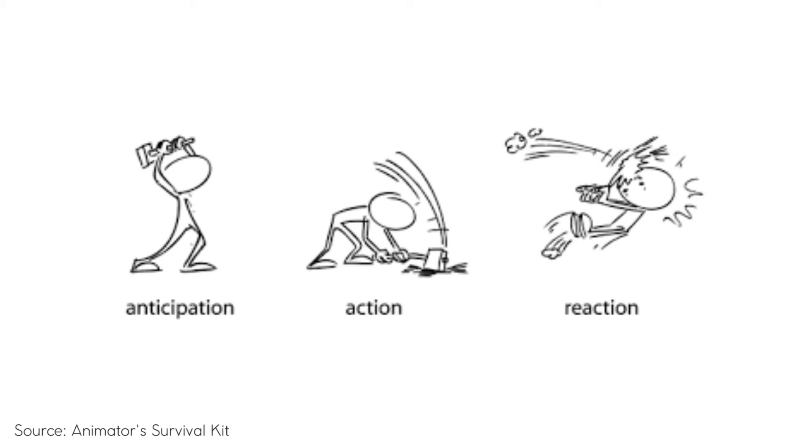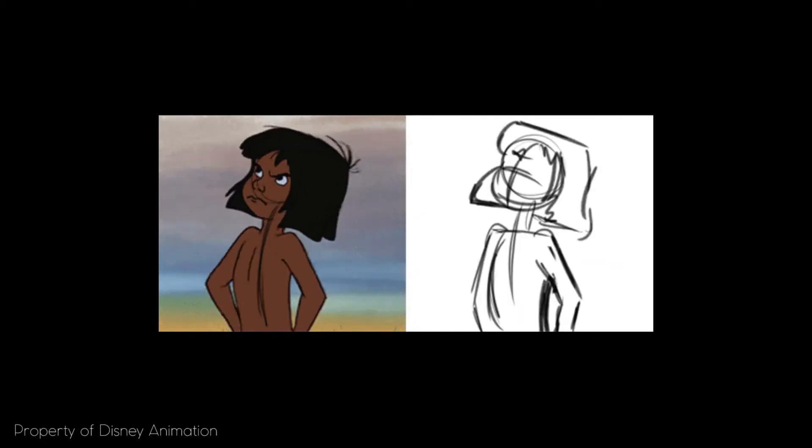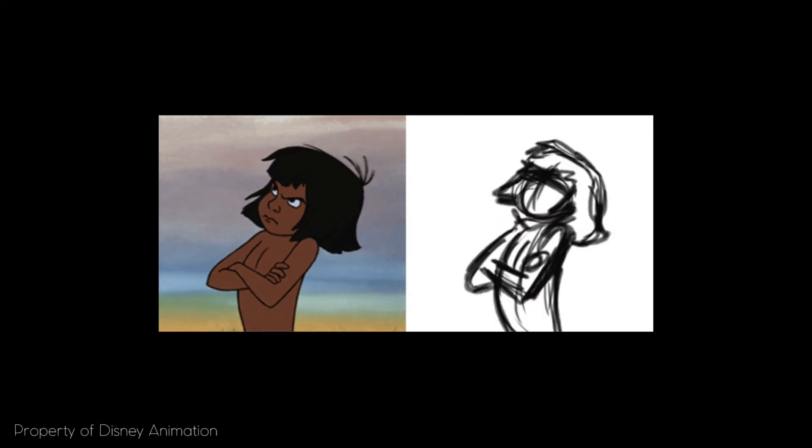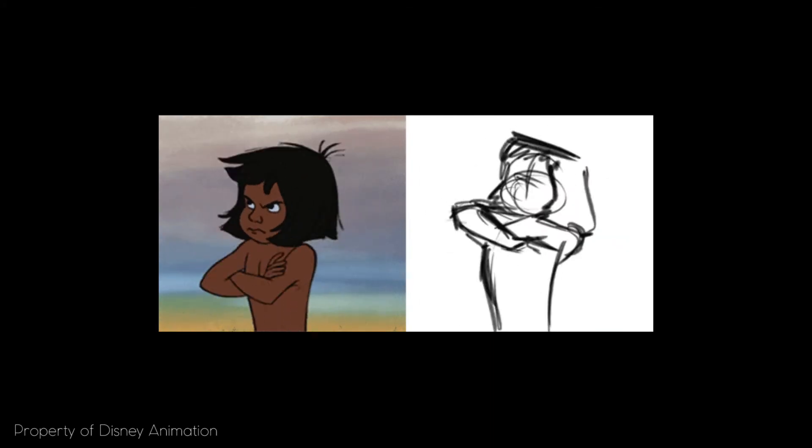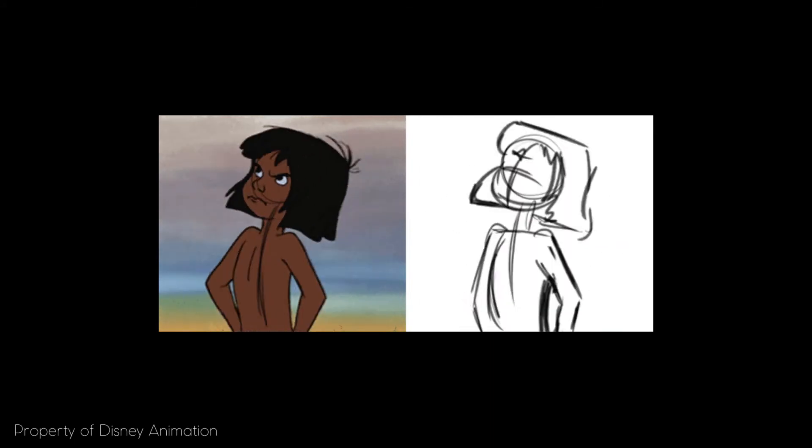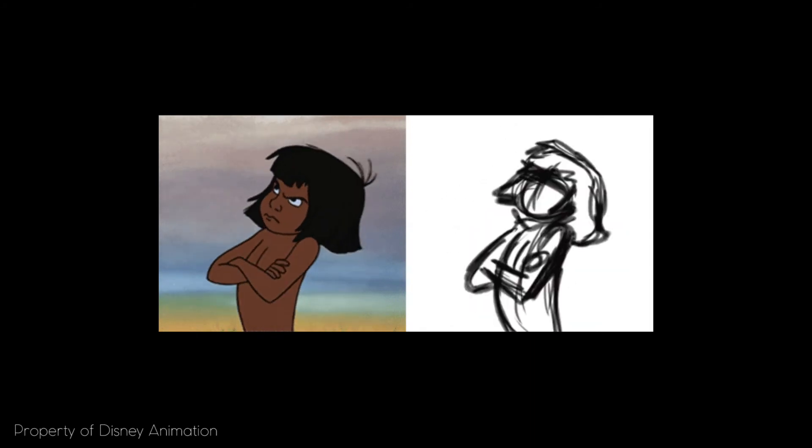Like in this example, he's anticipating to hammer down, and then there is the action, and then there might be a reaction to it as well. There are also some subtle animations like Mowgli here folding his legs, but before he does that he is anticipating to make that action very clear and to make it read properly.